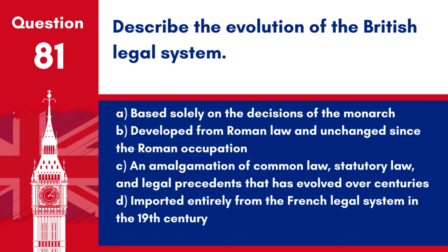Question 81: Describe the evolution of the British legal system. a. Based solely on the decisions of the monarch. b. Developed from Roman law and unchanged since the Roman occupation. c. An amalgamation of common law, statutory law, and legal precedence that has evolved over centuries. d. Imported entirely from the French legal system in the 19th century. Answer: c. The British legal system is a complex and adaptive system that has developed through centuries of tradition, case law, and legislative action.